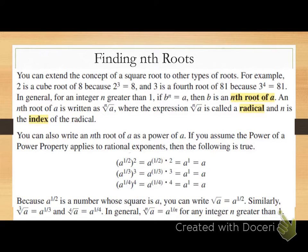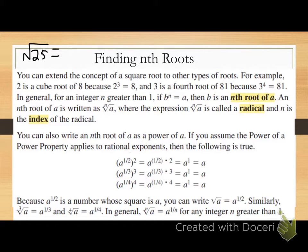We've talked about square roots before. What does the square root tell me to do? If I give you the square root of 25, what's the answer? Five. You're looking for the number times itself that gives you this number — essentially, what number squared gives me that number under the radical. What number times itself gives me 36? Six.